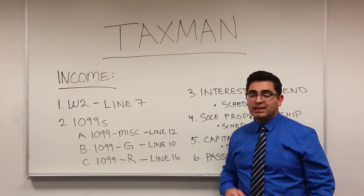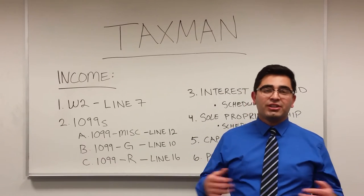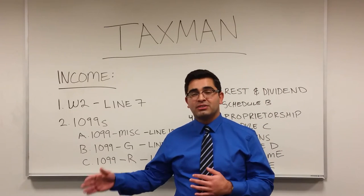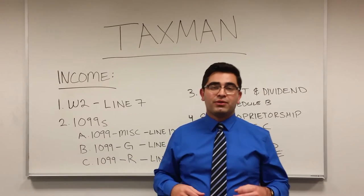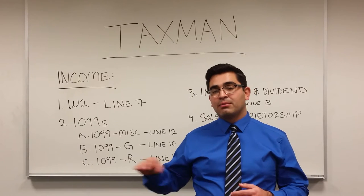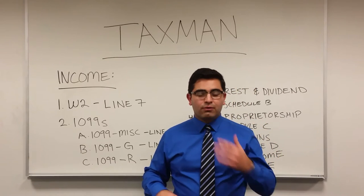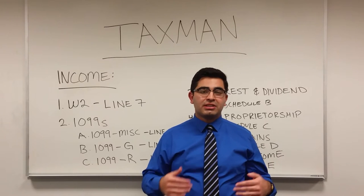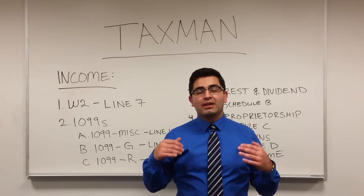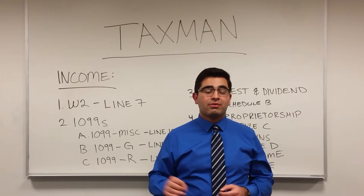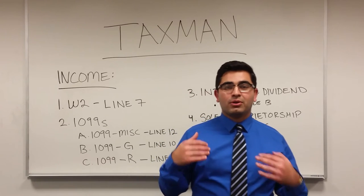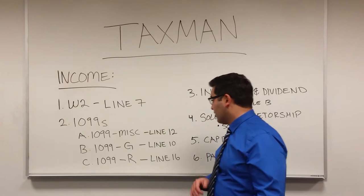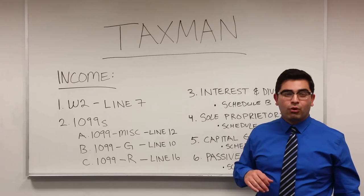Next is 1099-G. You receive a 1099-G if you have unemployment compensation throughout the year, or if you receive a state refund and itemize your deductions. For example, in 2015, if you itemize your deductions and receive a state refund, then in 2016, you have to report that refund as taxable income, and that is reported on line 10 of the 1040.